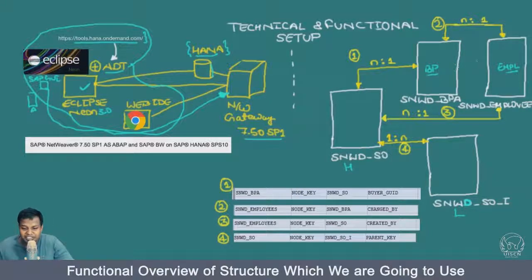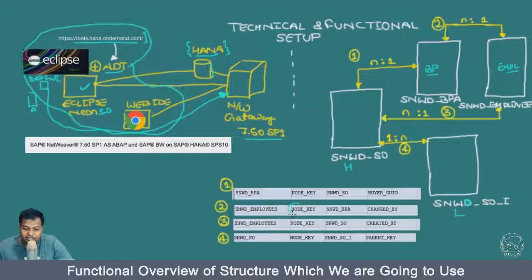Now, how the relationship is there between the tables. There is an N-to-one relationship from employee to business partner. The employee basically maintains the business partner record. In SNWD employees, the key relationship is node key, and in the business partner we have 'changed by'. So there will be a field in business partner called 'changed by' which will have an N-to-one relationship with your employee.